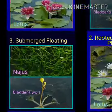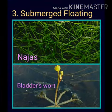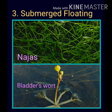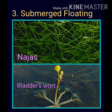Third, submerged floating. These plants are completely submerged in water. Roots are not fixed in the mud. Najas and bladderwort are examples of submerged floating plants.